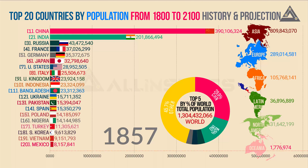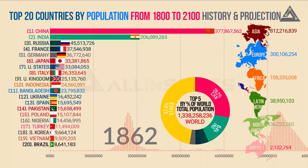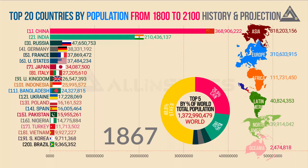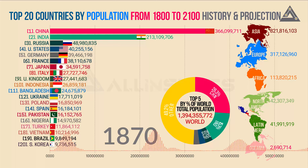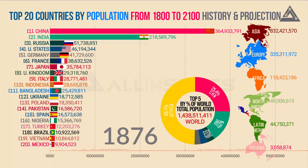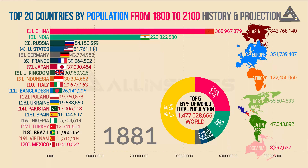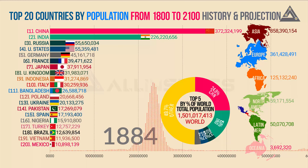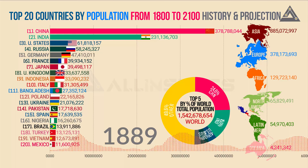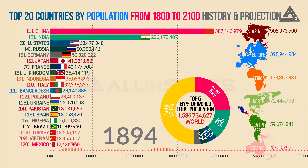Number one: life expectancy. Improving health leads to falling mortality, and this is one of the factors that increases the size of the population. Estimates suggest that in a pre-modern poor world, life expectancy was around 30 years in all regions. Since 1900, the global average life expectancy has more than doubled and is now above 70 years. In 2019, the country with the lowest life expectancy is the Central African Republic at 53 years, while Japan topped the world at about 84 years.